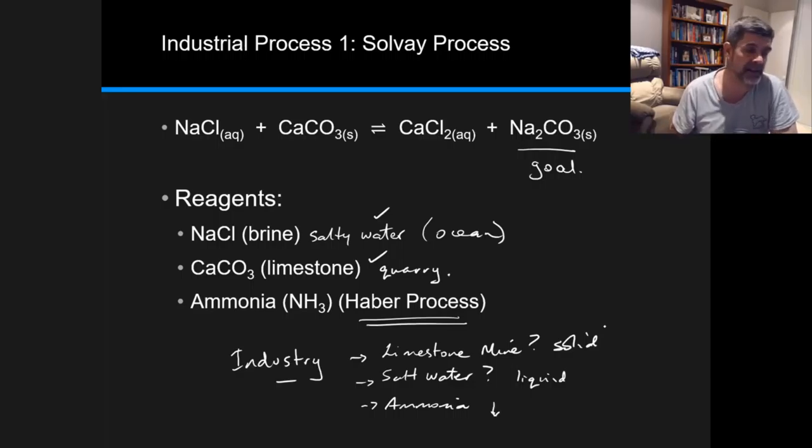Often you'll find Solvay plants are located somewhere close to the coast, somewhere with access to the ocean, but also somewhere not too far from a limestone mine. And if there happens to be a Haber plant nearby that's allowing the production of ammonia as well, that's perfect in terms of the availability of reagents.